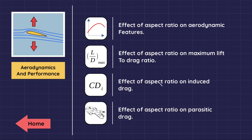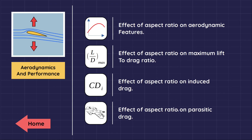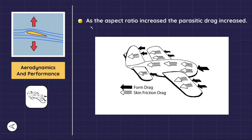As the aspect ratio increases, the wing induced drag decreases, since induced drag is inversely proportional to the wing aspect ratio. Regarding parasitic drag, as the aspect ratio increases, parasitic drag also increases. Parasitic drag is the combination of form drag, which arises because of the shape of the object, and skin friction drag, which is directly related to the wetted surface area — the area of the surface in contact with the fluid.